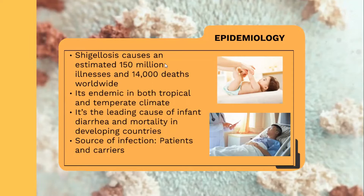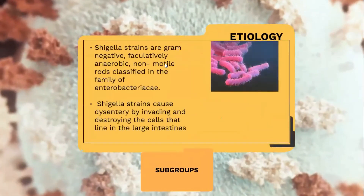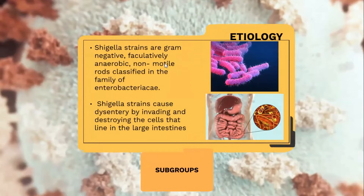The source of infection are patients and carriers. Moving on to the etiology, Shigella strains are gram-negative bacteria. They are facultative anaerobic, non-motile rods classified in the family Enterobacteriaceae. The causative organism is Shigella strains. They are facultative, which means they grow with or without the presence of oxygen, and they are non-motile, which means no flagella and no movement.